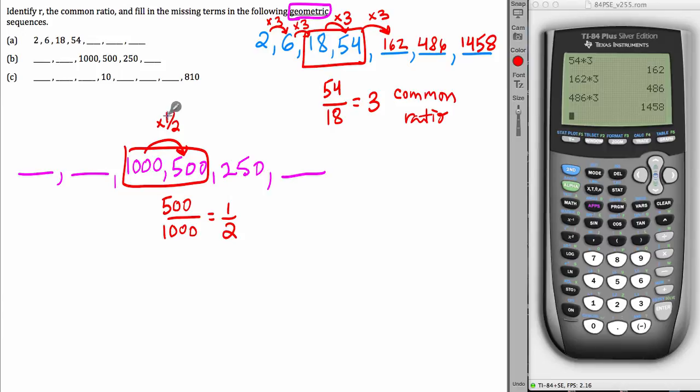1000 times 1 half is 500, 500 times 1 half is 250, 250 times 1 half, the next term will be 125. And every time you move to the right, you multiply by 1 half. Moving to the left, you'd be dividing by 1 half to create the previous term. So that would make 2000 and 4000.